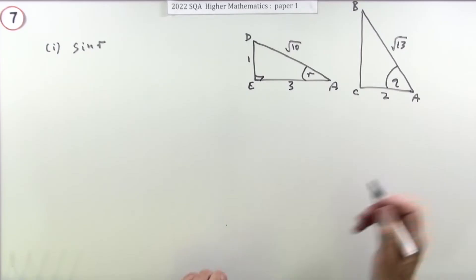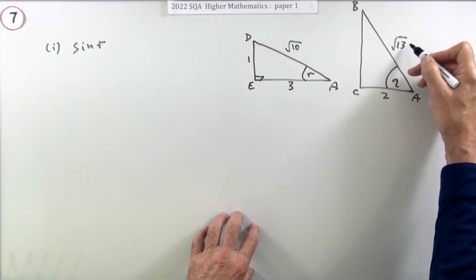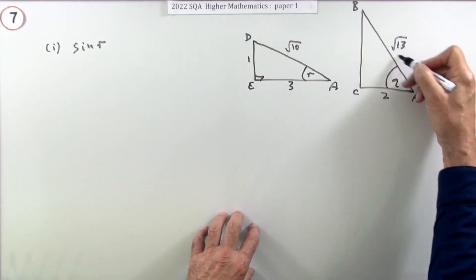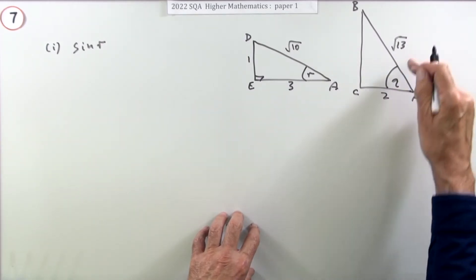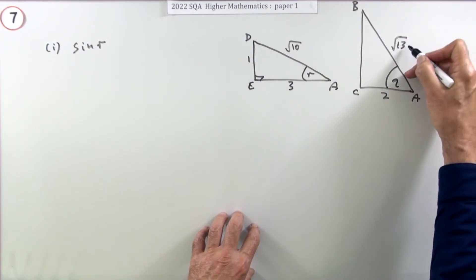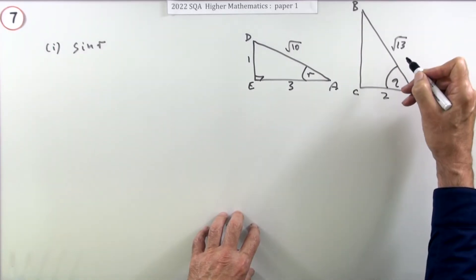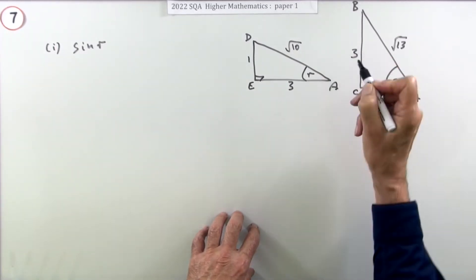Same on this side. We've got square this side. This side here will be this squared minus that squared, because that has to be the biggest one. So 13 minus 4 is 9, so the square root of 9 is 3.